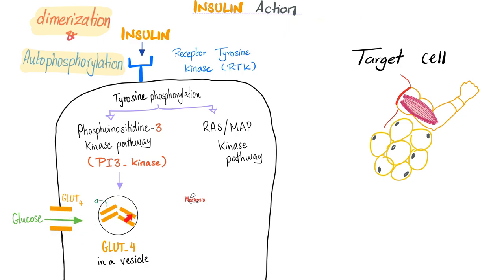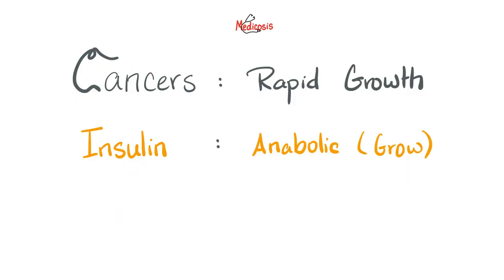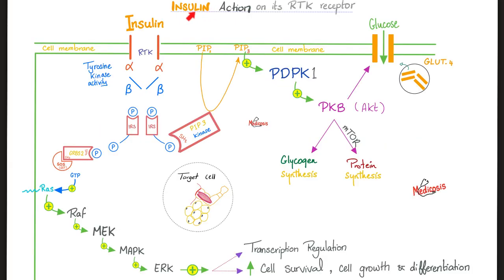What do cancers and insulin have in common? Both love growth. When insulin stimulates something called RAS — which stands for rat sarcoma — don't be surprised, because sarcoma is a cancer that loves growth, and insulin is also pro-growth. Many of the things you will learn about have to do with cancer; they also have to do with how insulin works. Insulin is here trying to act on the target cell — a fat cell or a skeletal muscle cell.